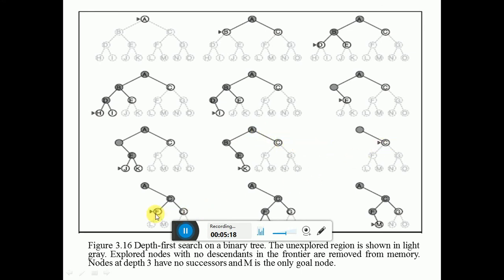Then C is expanded into F and G. Again check: is it the goal node? No. Then F is expanded into L and M. Check: is M the goal node? Yes, it is the goal node. You can stop the searching here.